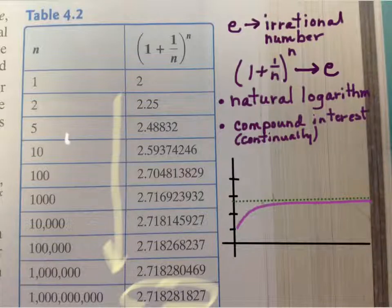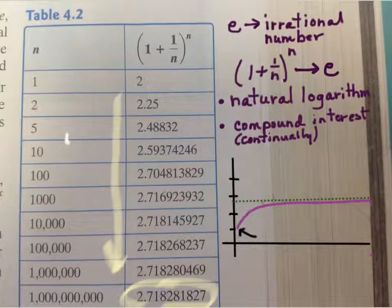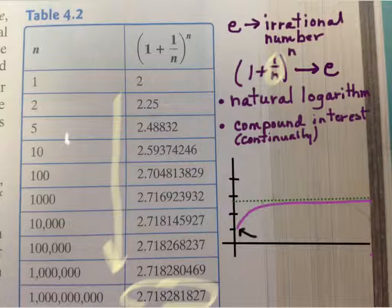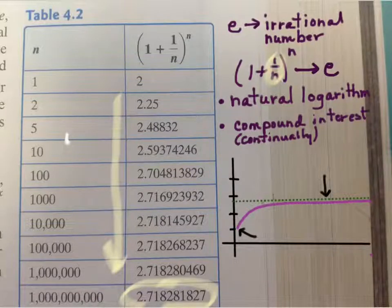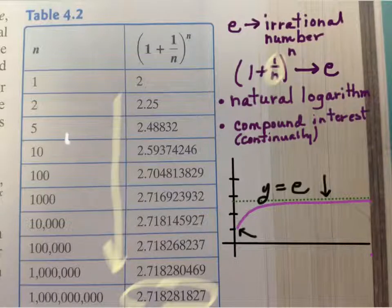And so if we were to graph 1 plus 1 over n raised to the n power, this would be the graph of it, and then the value of e would be the asymptote. Notice that n cannot be 0 because we have 1 over n up here. That's going to be your asymptote, approximately 2.718. So y equals e, that would be the equation for the asymptote.